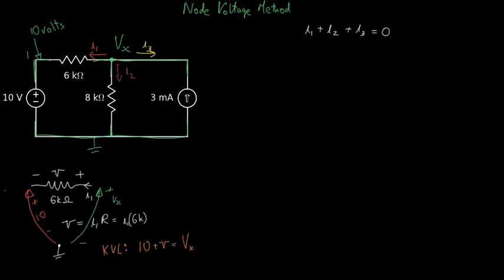That means that V is Vx minus 10. And so finally we can solve for I1 is V over R, which is Vx minus 10 over 6000.